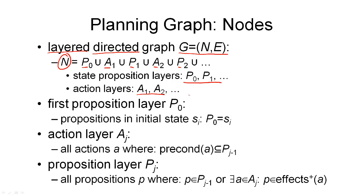These types of layers alternate in the graph. We start with a proposition layer P0, followed by an action layer, followed by a proposition layer, and so on. In the first proposition layer P0, we have a node for each proposition that was true in the initial state. So SI, our initial state, is a set of proposition symbols, and in P0 we have a node for each of these proposition symbols.